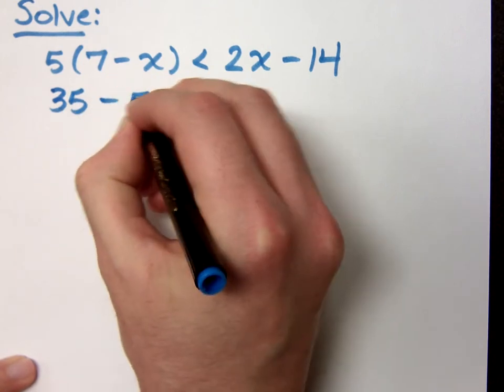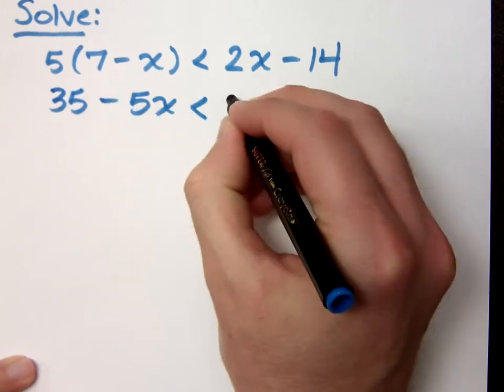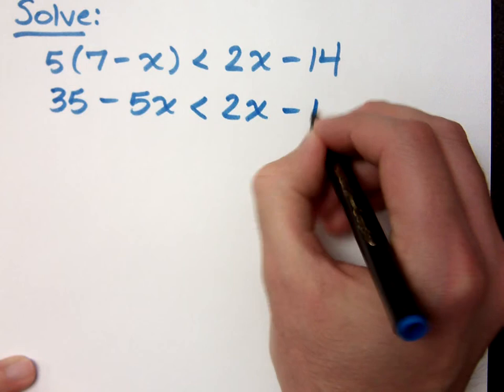When I do that, I get 35 minus 5x is less than 2x minus 14.